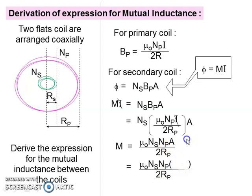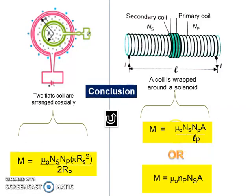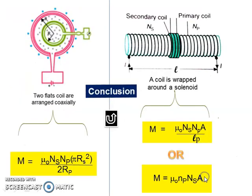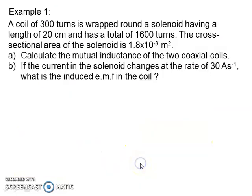The area of the secondary coil is expressed as πRs². So this is the conclusion — the mutual inductance formulas for the two cases: solenoid-coil and two coaxially arranged flat coils. Let's now try an example.